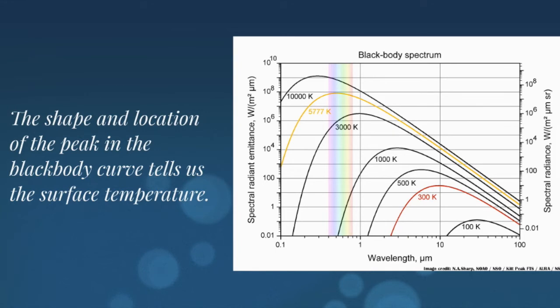So when I look at the black body spectrum, the shape and location of the peak can tell me the temperature of the surface. So looking at this plot, I can see that I can have a wide range of temperatures. And if I get a temperature of a star that's, say, 10,000 degrees Kelvin at the surface,